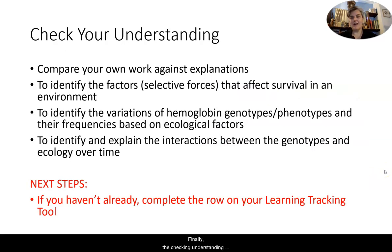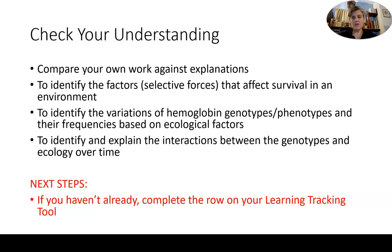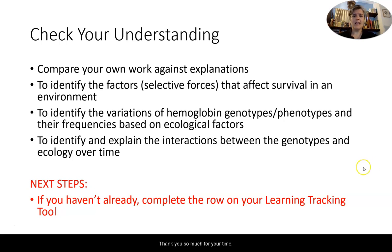Finally, the checking understanding. You've compared your work against the explanations. You've identified factors or selective forces that affect survival in the environment, identified variations of hemoglobin genotypes and their phenotypes as well as their frequencies based on ecological factors, and identified and explained the interactions between the genotypes and ecology over time. Your next step, if you haven't already done it, is to complete that row on your learning tracking tool. I hope this was useful for you — thank you so much for your time, and have a brilliant day today.